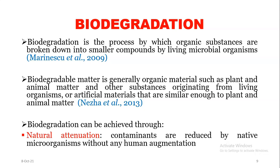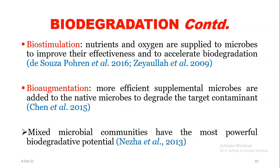Biodegradation can be achieved through: first, natural attenuation — where contaminants are reduced by native or local microorganisms in the environment without any human augmentation or intervention, so you allow the microbes themselves to degrade these contaminants without helping them in any way.